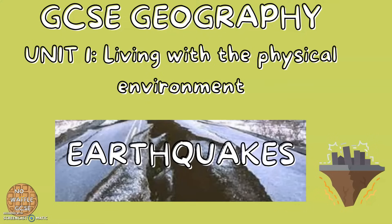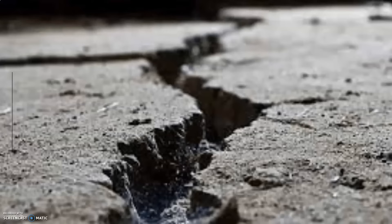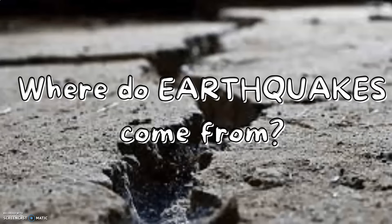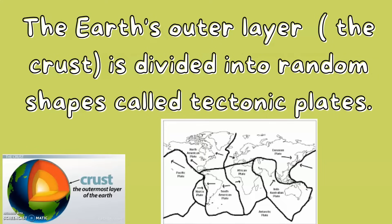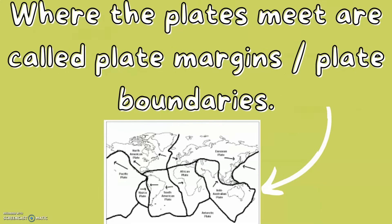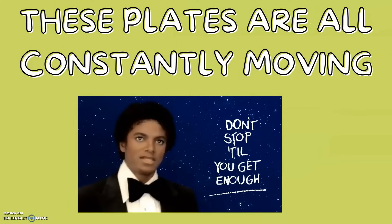GCSE Geography Earthquakes. Where do earthquakes come from? The Earth's outer layer, the crust, is divided into random shapes called tectonic plates. Where the plates meet are called plate margins or plate boundaries. These plates are all constantly moving.